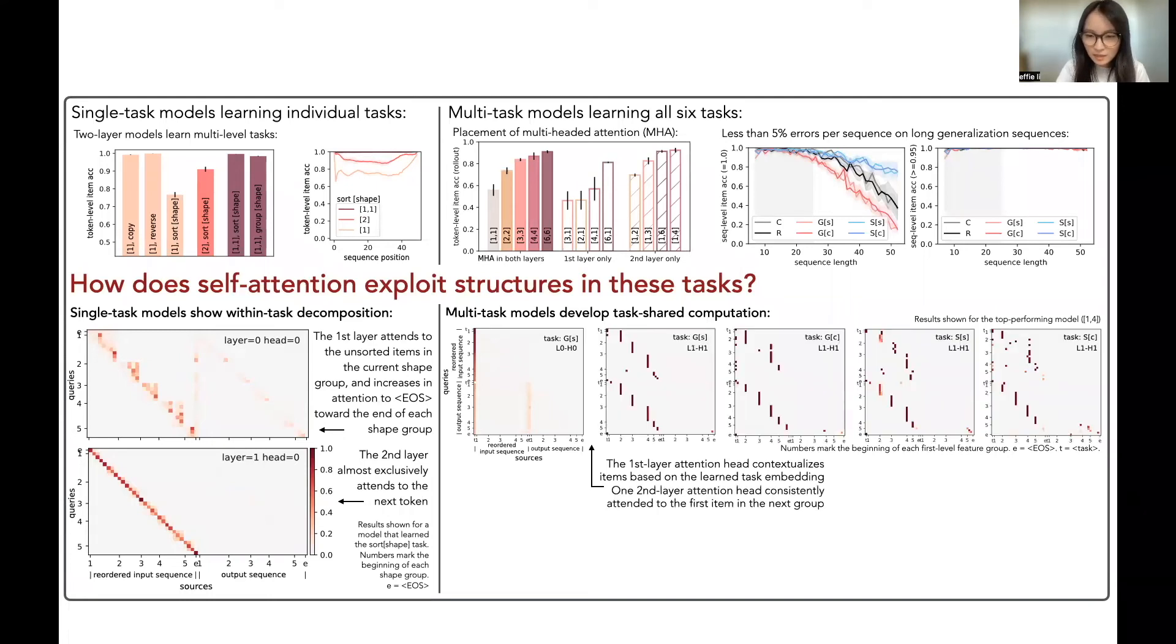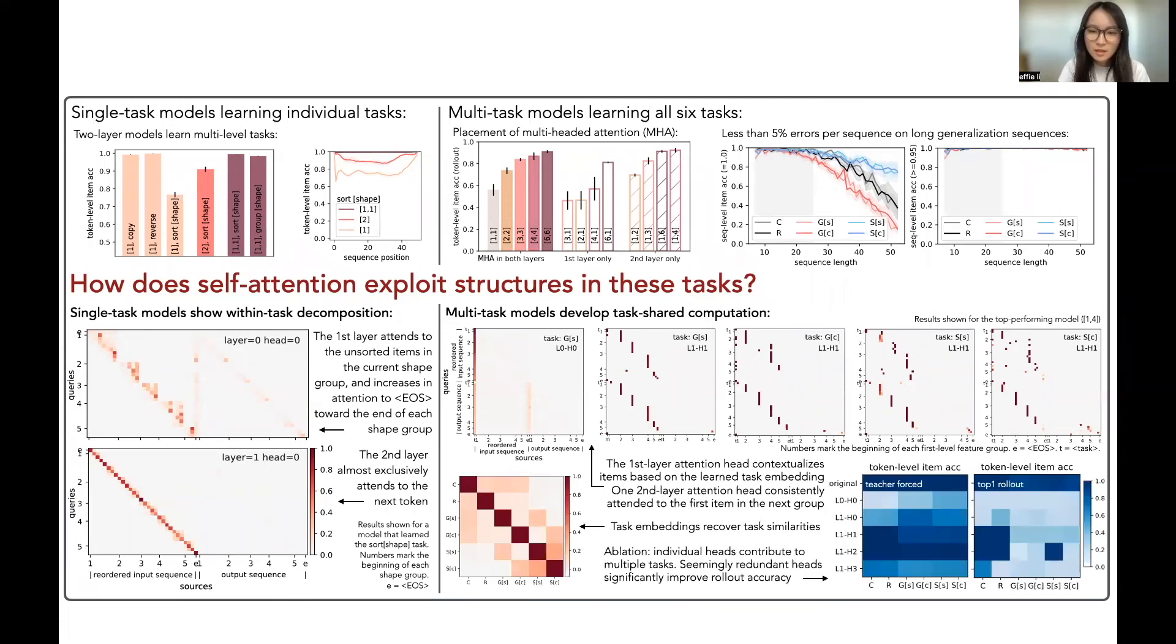And some second layer attention heads consistently attended to the first item in the next feature group in all multi-level tasks. We also find that the learned task embeddings recover task similarities, and when we ablate individual attention heads, we see clearly that they each contribute to multiple tasks.